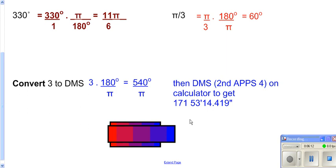And then it gives you 171. And that's wrong. I forgot the degree symbol here. So it's 171 degrees, 53 minutes, 14.419 seconds. And you can see the work over here on the calculator.